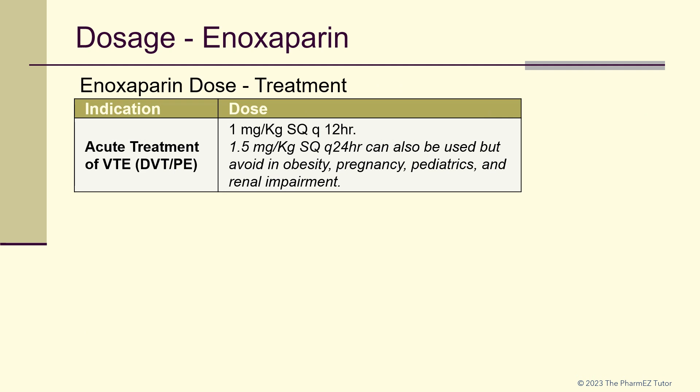For treatment doses of enoxaparin: for acute treatment of VTE, the dose is 1 mg per kg subcutaneously every 12 hours. 1.5 mg per kg subcutaneously every 24 hours can also be used, but this dose should be avoided in obesity, pregnancy, pediatrics, and renal impairment.